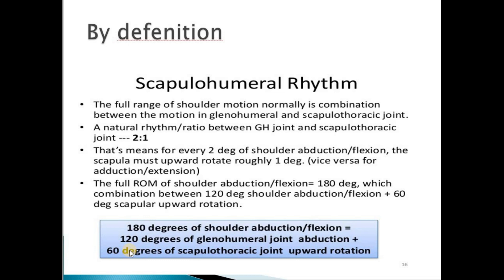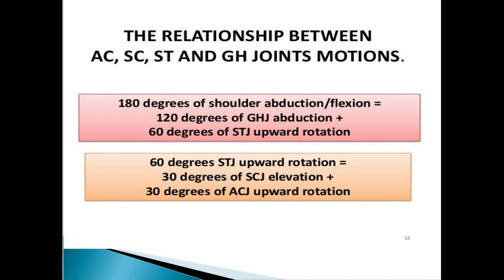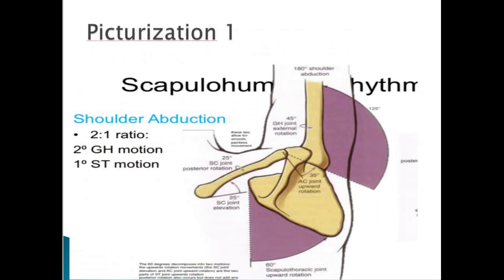Now we will see the relationship between the AC joint, the ST joint, and the glenohumeral joint combined. So 180 degrees of shoulder abduction or forward flexion equals 120 degrees of glenohumeral joint abduction and 60 degrees of scapulothoracic joint upward rotation. That 60 degrees of scapulothoracic joint motion breaks down further into 30 degrees of sternoclavicular joint elevation and 30 degrees of acromioclavicular joint upward rotation.